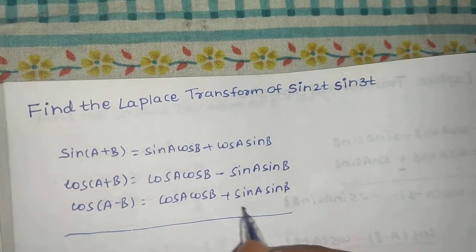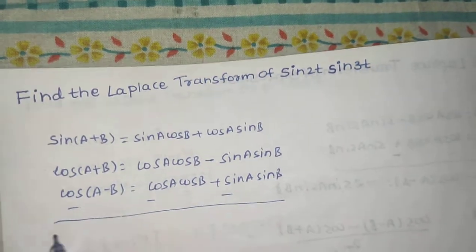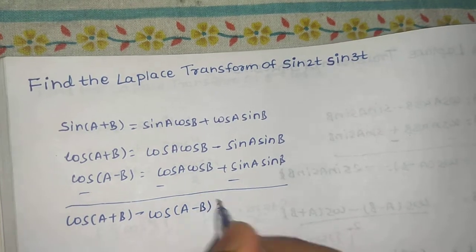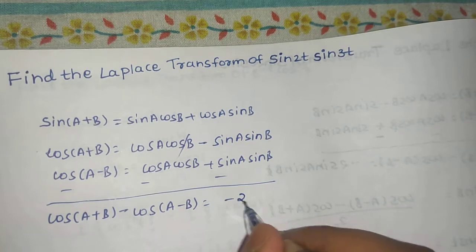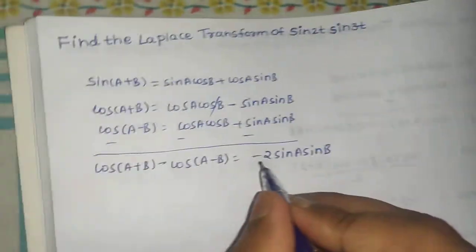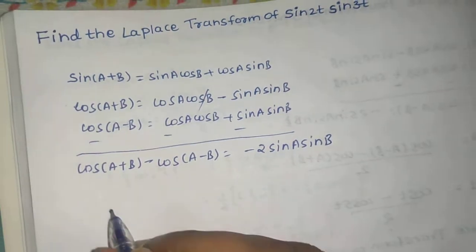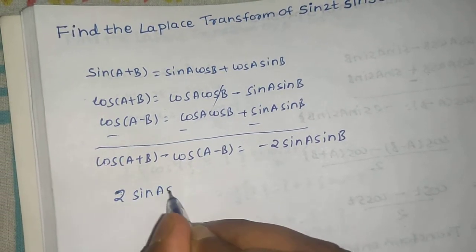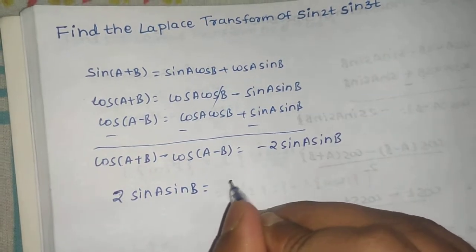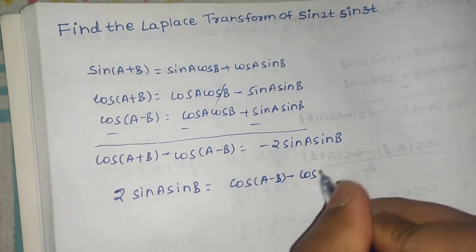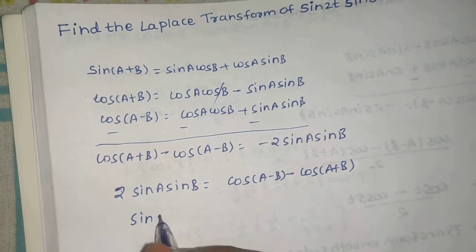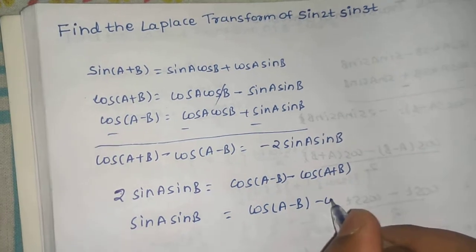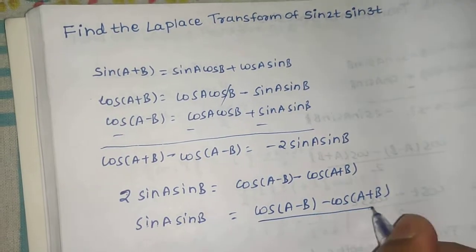Now if we subtract: cos(a+b) − cos(a−b), the cos(a)cos(b) terms cancel, giving −2·sin(a)sin(b). Rearranging, 2·sin(a)sin(b) = cos(a−b) − cos(a+b), so sin(a)sin(b) = [cos(a−b) − cos(a+b)] / 2.